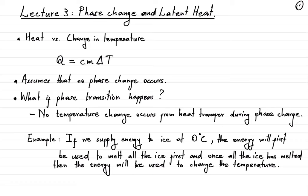Now, what happens if we reach the temperature where the object will begin to change its phase from one state to another? We need to account for this because this is an observed phenomenon in nature, and thermodynamics is interested in describing such situations. From experimentation, what we observe is that during a phase transition or phase change, the temperature does not change when we transfer heat to the substance. When we reach a point of phase transition, the amount of heat we transfer is first spent to change the phase.